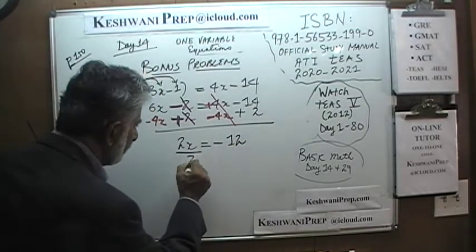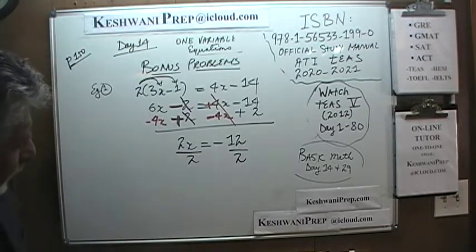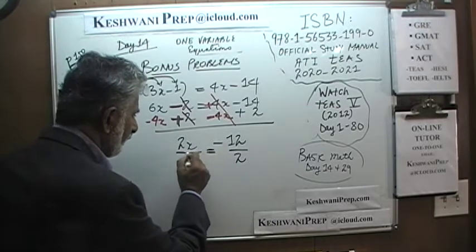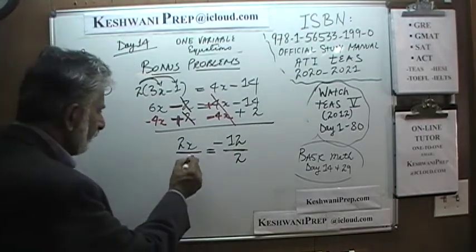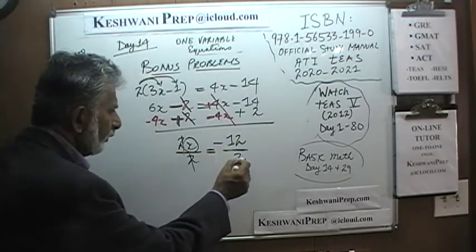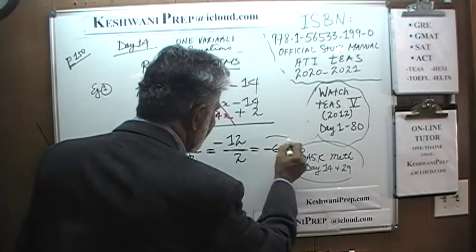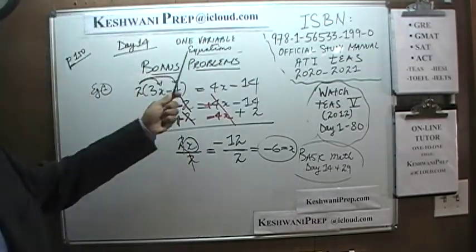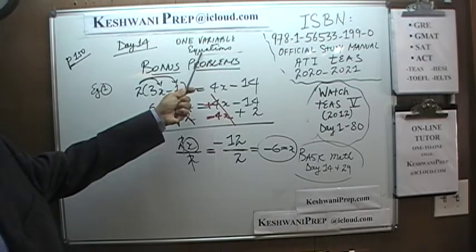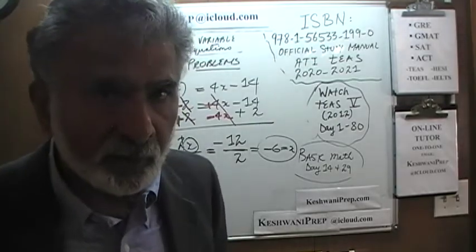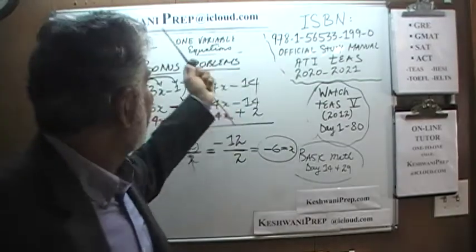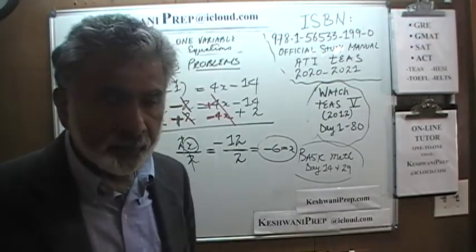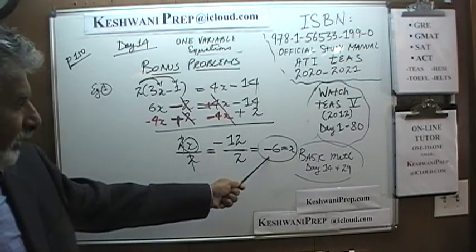Now divide both sides by 2. The 2 cancels, and x equals negative 12 over 2, which is negative 6. So we are claiming that x is equal to negative 6. If you want more practice with one-variable equations, find my channel — type in Keshwani basic math, day 14, and also day 29. We have found x; we are claiming x equals negative 6.